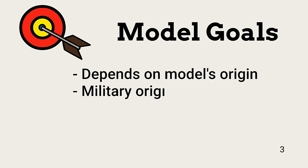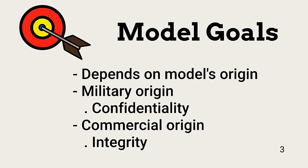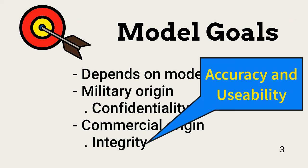Each model has specific goals. The goals of the model are determined mainly by who developed it. For example, models of military origin focus on confidentiality, while those of commercial origin tend to focus on the accuracy and usability of the protected data, or its integrity.